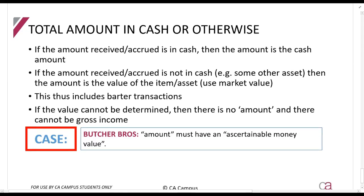The next part of the definition says 'the total amount in cash or otherwise.' Basically, whether you receive amounts in cash or someone pays you in something that is not cash, you still need to include it in your gross income. Otherwise this would be a way to avoid gross income. For example, if I sell you a pair of shoes and you give me a cow in return, I will still be taxed even though I didn't receive money — I received a cow. The rule is that you must use the market value of the asset received.